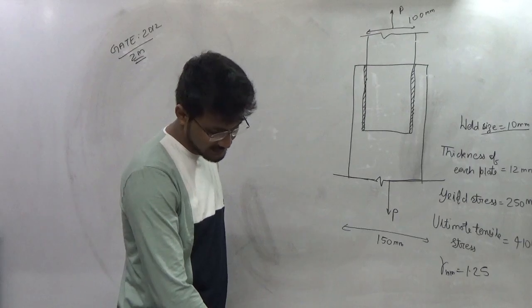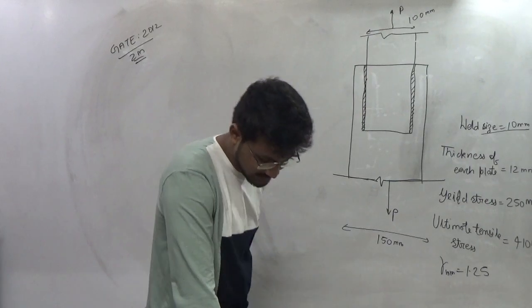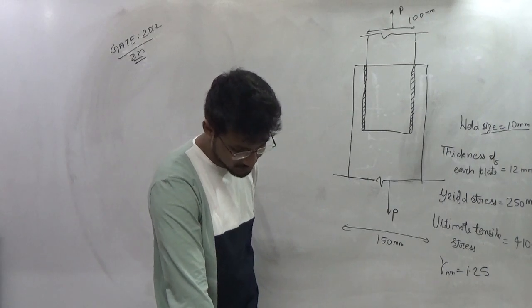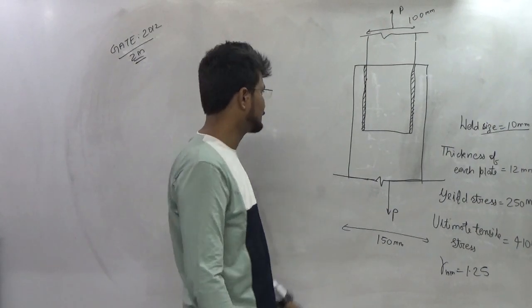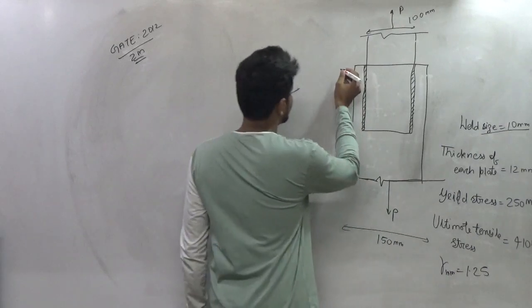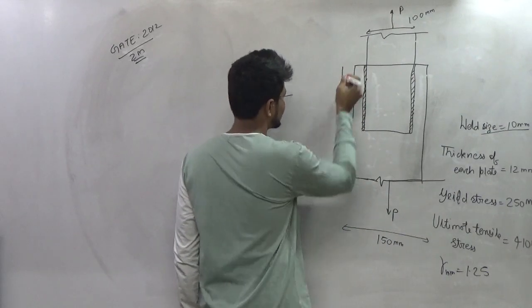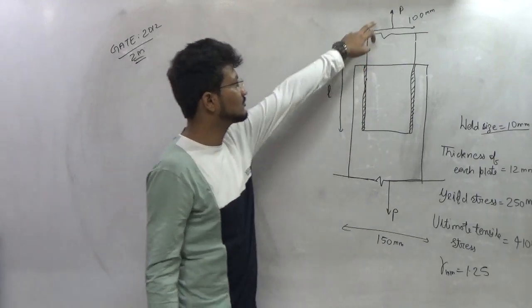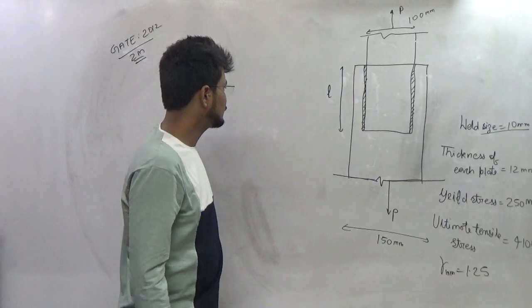the minimum length rounded off to the next nearest higher multiple of 5 mm of each weld to transmit a force P equals 270 kN. So what we have to find out, this particular length of the weld which is required to transmit a force P will be equal to what?